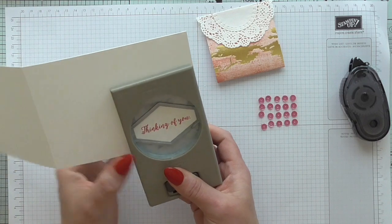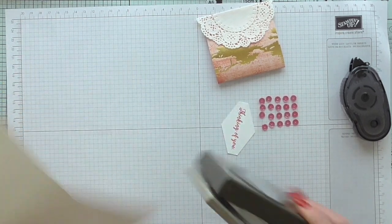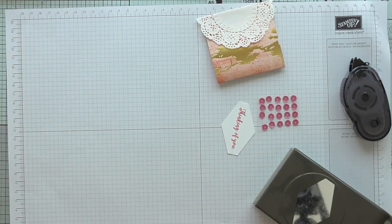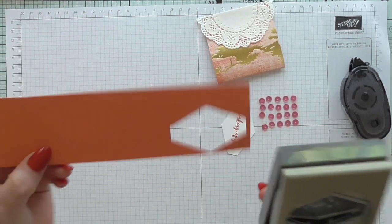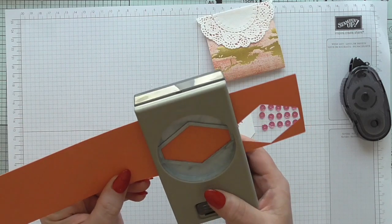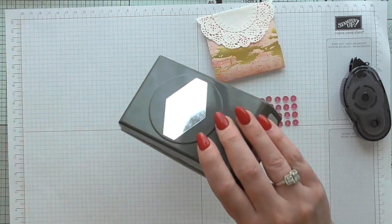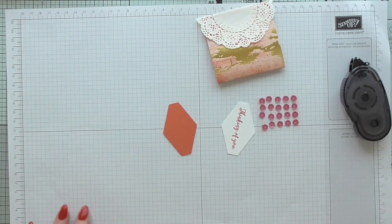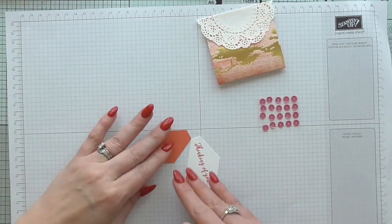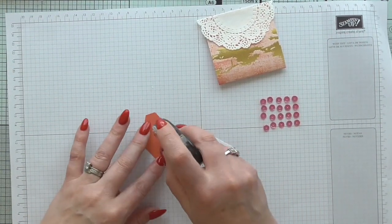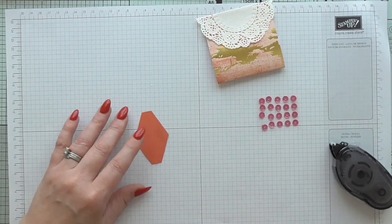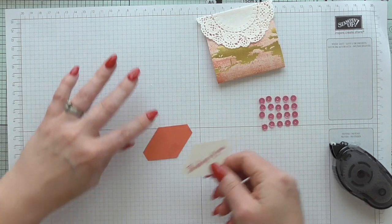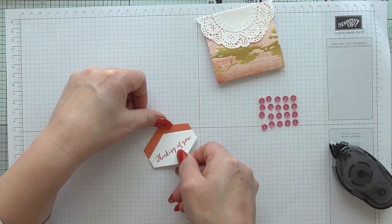Right, so I'm going to punch that out now like so. And what I'm going to do, just to extend that sentiment, I'm going to punch one out in Calypso Coral. I like to do this with the shaped punches, all the shape punches, it just makes your sentiment have a sort of a frame to it and it also makes it a little bit bigger, I suppose. So I'm just going to layer that on there like so, and it just makes that sentiment just stand out that little bit more.